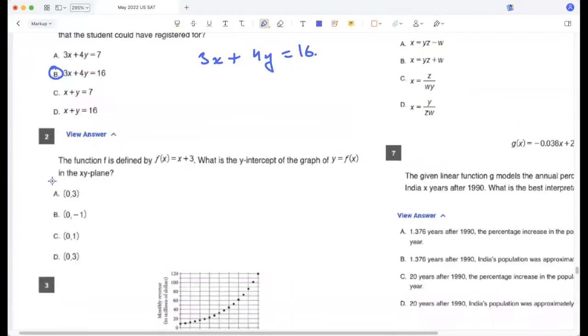The function f is defined by this. What is the y-intercept of the graph? So three, because f(x) is y, which is mx plus c, and c is the y-intercept. So 0, 3.